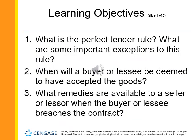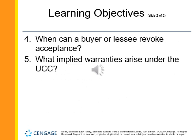These are the learning objectives which the author of the textbook feels are important for business majors to know. They may also conceivably form the basis of a quiz that might be given on Monday regarding this chapter. Number 1: What is the perfect tender rule? What are some important exceptions to this rule? Number 2: When will a buyer or lessee be deemed to have accepted the goods? Number 3: What remedies are available to a seller or lessor when the buyer or lessee breaches the contract? Number 4: When can a buyer or lessee revoke acceptance? Number 5: What implied warranties arise under the UCC?